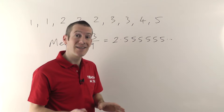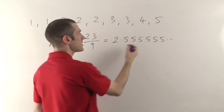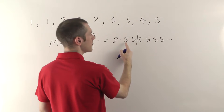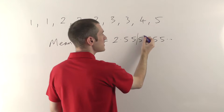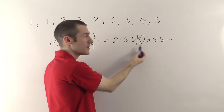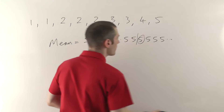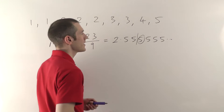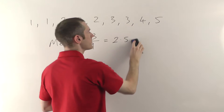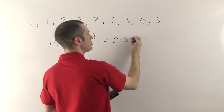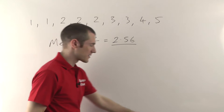If the question doesn't say, you can choose — one or two decimal places is usually fine, but you must round correctly. If I go for two decimal places, I put my line after the second decimal place, look at the next digit: it's 5 or more, which means this digit has to go up. Throw away everything after the line, and the 5 rounds up to 6, giving 2.56.